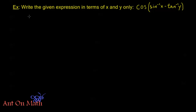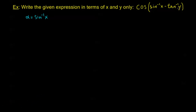Recall when we had problems like this before, the first thing we always do is make substitutions. I'm going to substitute alpha equals sine inverse of x. Now before we always just made one substitution, but since it's a difference we're going to need to make two substitutions. From the definition of the inverse function, this means that sine of alpha equals x, and we also know that alpha is between negative pi over 2 and pi over 2.